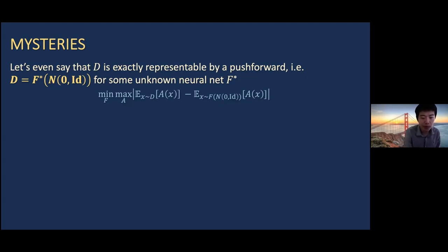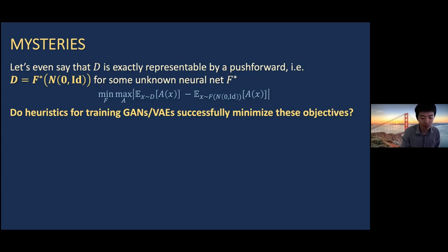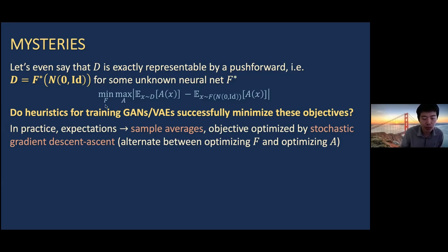One question is: for heuristics like GANs and variational autoencoders, which put forth objectives to minimize, you can't achieve a minimax solution without approximations. In practice, you can't work with population expectations — you work with sample averages. Likewise, you can't globally optimize the objective, so in practice we use local methods like stochastic gradient descent/ascent, alternating between optimizing the generator f and the discriminator A.